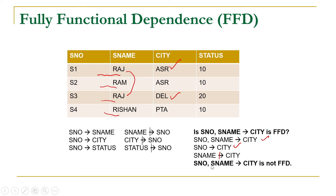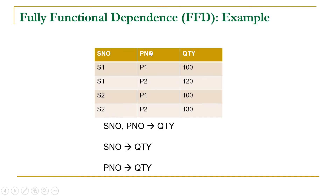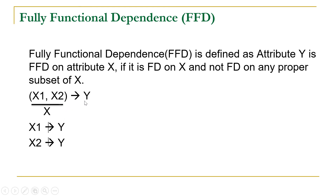City is dependent on one subset of X which is S number, and according to the definition it should not be dependent on any subset. In the SP table, quantity is fully functional dependent on the combination of S number and P number, because quantity is not functionally dependent on any of its subsets. So the concept is: Y is fully functional dependent on X if and only if it is functionally dependent on X — the first requirement — but it should not be functionally dependent on any of its subsets X1 or X2. If it is dependent on a subset, then it should not be considered fully functional dependence.